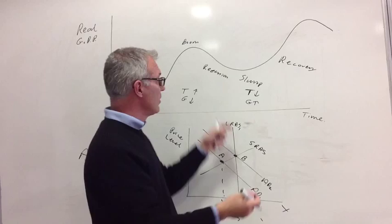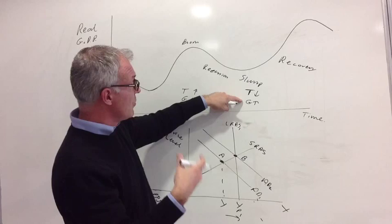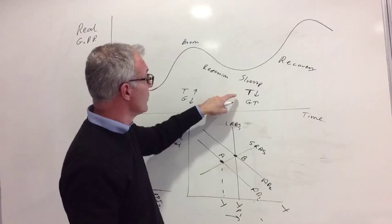Government expenditure is likely to increase because there will be more unemployment. Although unemployment is a lagging indicator and it takes time for this to come, there will also be more expenditure on benefits as people's incomes fall.